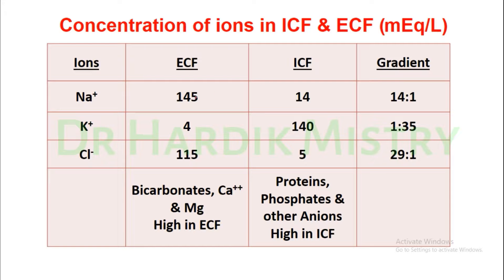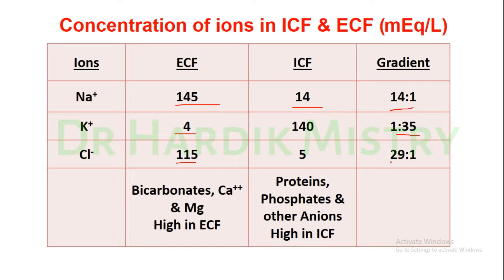The sodium ion concentration in the extracellular fluid is 145 milliequivalents per litre and in the intracellular fluid 14 milliequivalents per litre, giving a concentration gradient of 14:1. For potassium, ECF is 4 milliequivalents per litre and ICF is 140 milliequivalents per litre, giving a gradient of 1:35. For chloride, ECF is 115 and ICF is 5 milliequivalents per litre, giving a gradient of approximately 29:1.